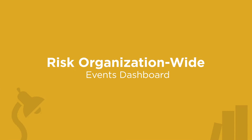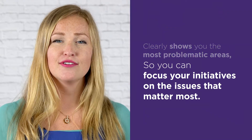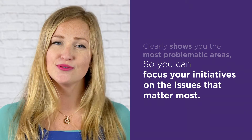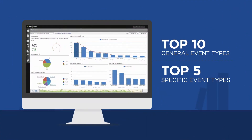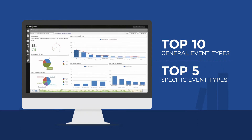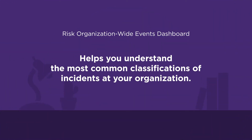The first dashboard we're going to talk about is the Risk Organizationwide Events Dashboard because it's so commonly used in RL6. It clearly shows you the most problematic areas so that you could focus your initiatives on the issues that matter most. The data displayed in this dashboard shows you the top 10 general event types and the top 5 specific event types this quarter compared to the previous quarter. This information is important so that you can understand the most common classifications of incidents at your organization.